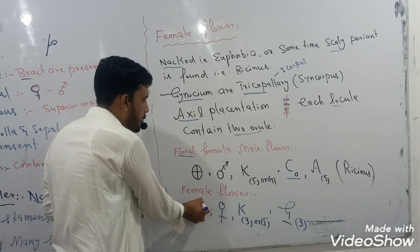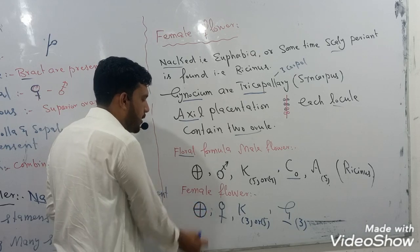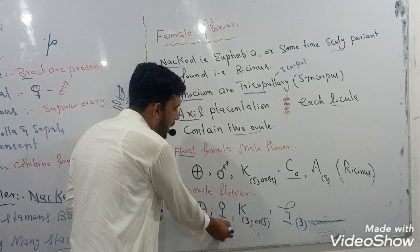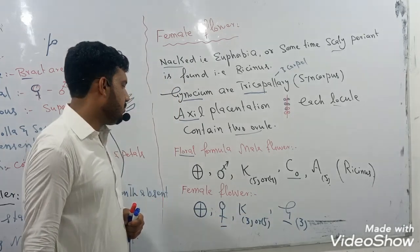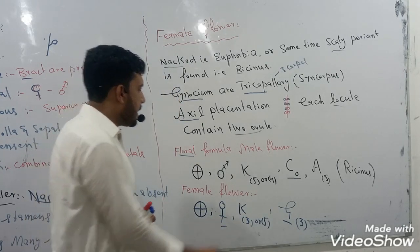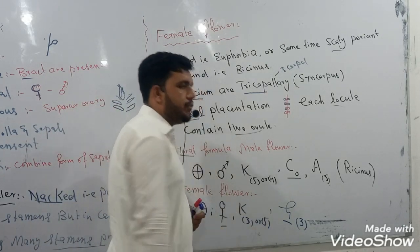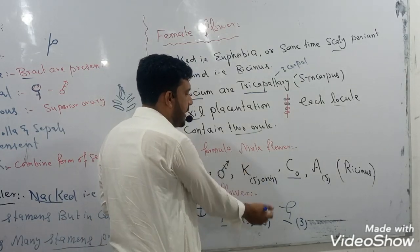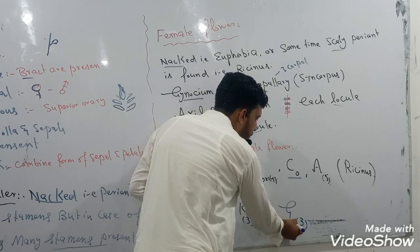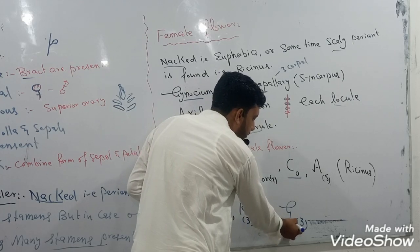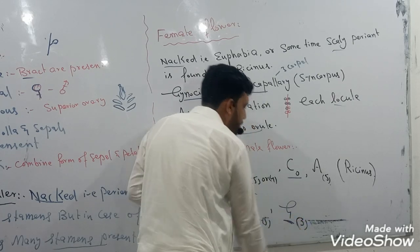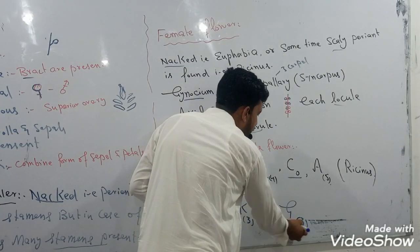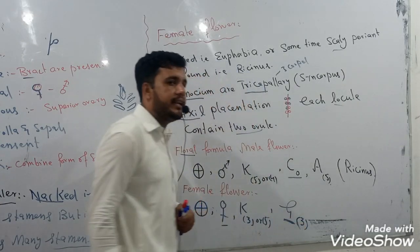The female flower is also actinomorphic. Only the female part — gynoecium — is found in this flower. The calyx has three to five fused members. The male part — androecium — is absent. The gynoecium is in tricarpellary condition with three fused carpels, which is syncarpous. The ovary is superior, which is known as hypogynous condition.